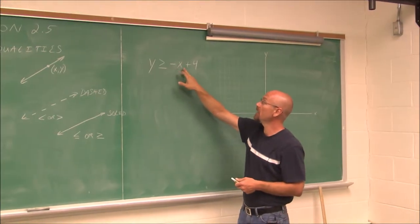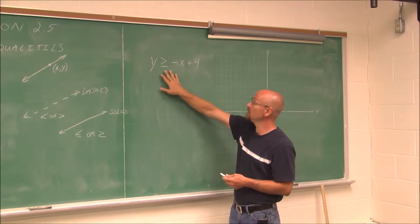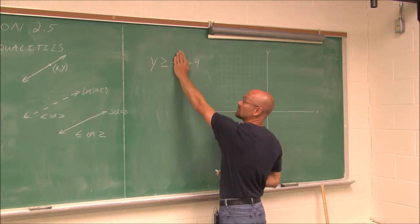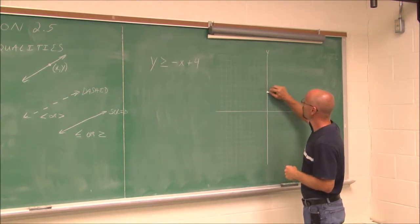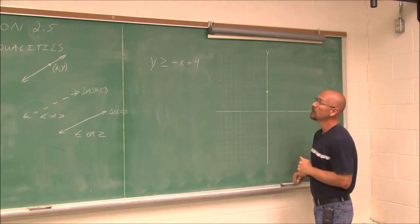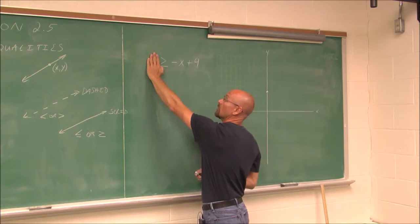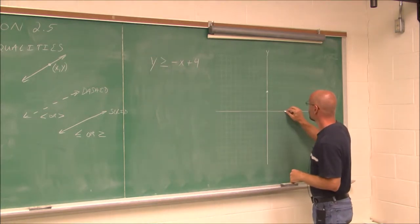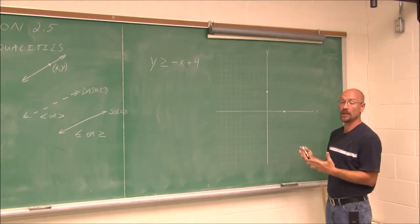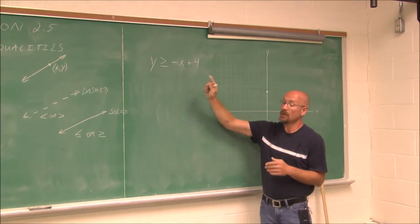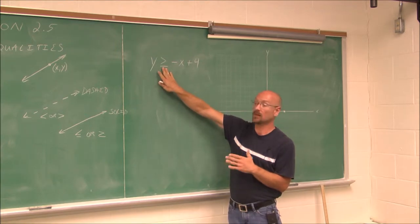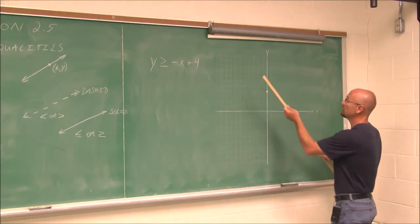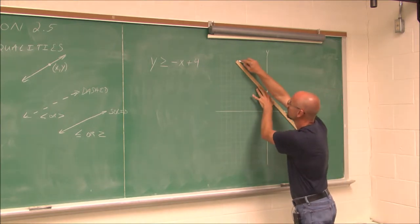Here we have y is greater than or equal to negative x plus 4. It looks like the equation of a line in slope-intercept form, and that's exactly how we're going to graph it. I like to use the intercepts. If x is 0, y would be 4, so I'm going to plot the ordered pair (0, 4). I'm also going to plot the x-intercept: when y is 0, x would be positive 4, so that's the ordered pair (4, 0). Now that I have two points, I can draw the line. Since it's greater than or equal to, the ordered pairs could equal values on the line, so I'm going to connect these points using a solid line.